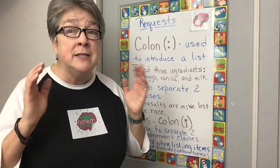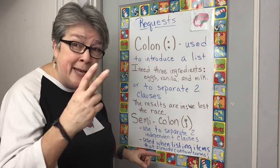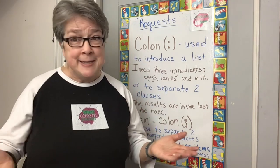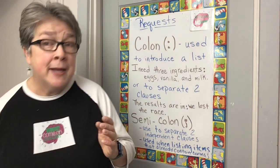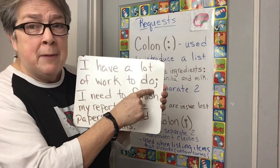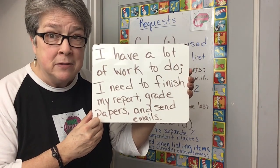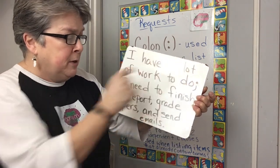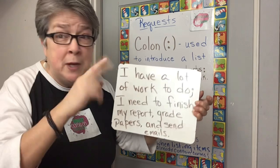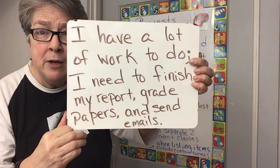Now let's look at the semicolon. The semicolon is used to separate two independent clauses. What's an independent clause? An independent clause can stand alone — it's independent. Here's my example. It's a double whiteboard day. I have a lot of work to do — semicolon — I need to finish my report, grade papers, and send emails. Each part could be its own sentence with a period. Two independent clauses, but I can join them together with a semicolon. There it is.